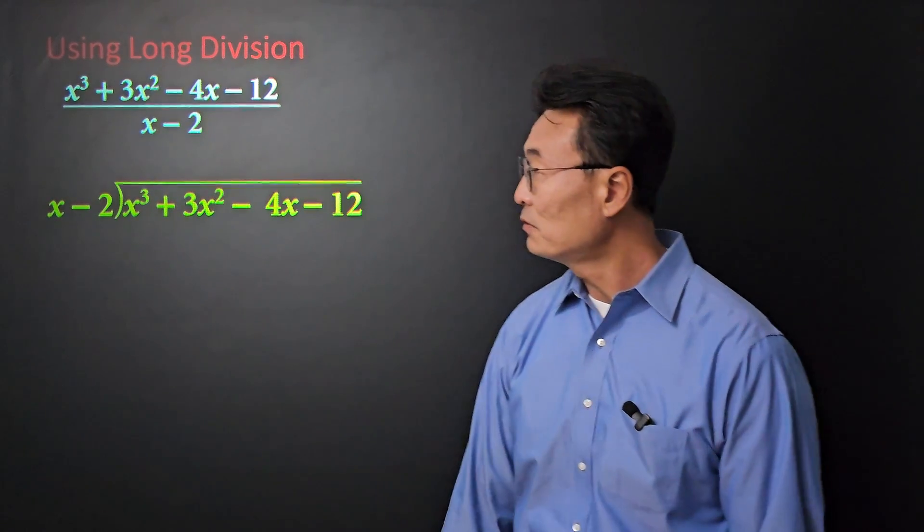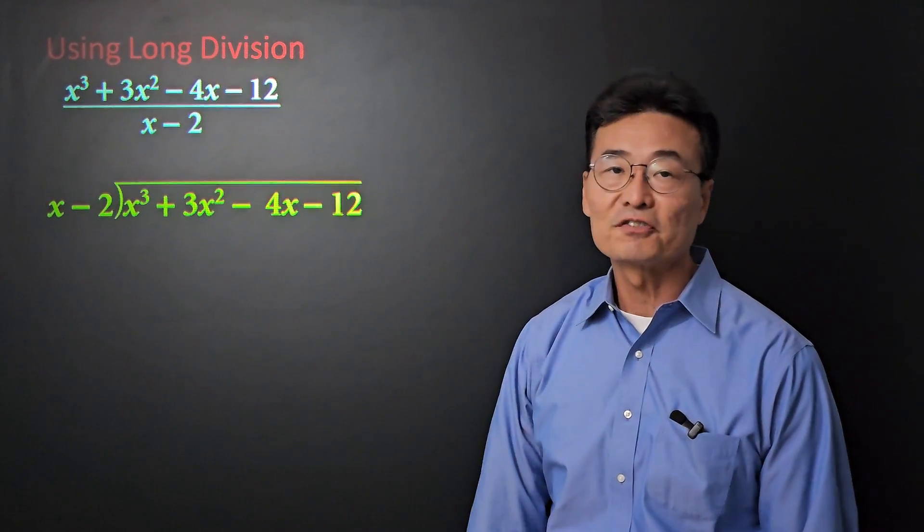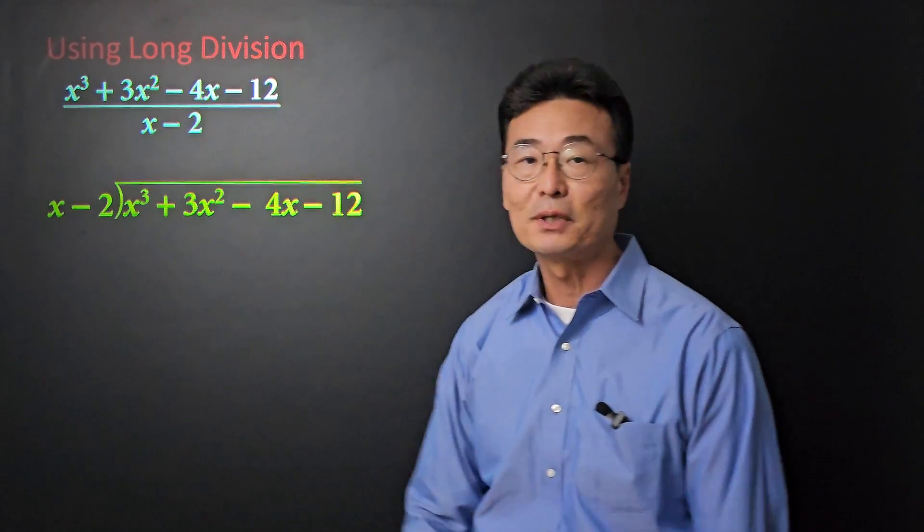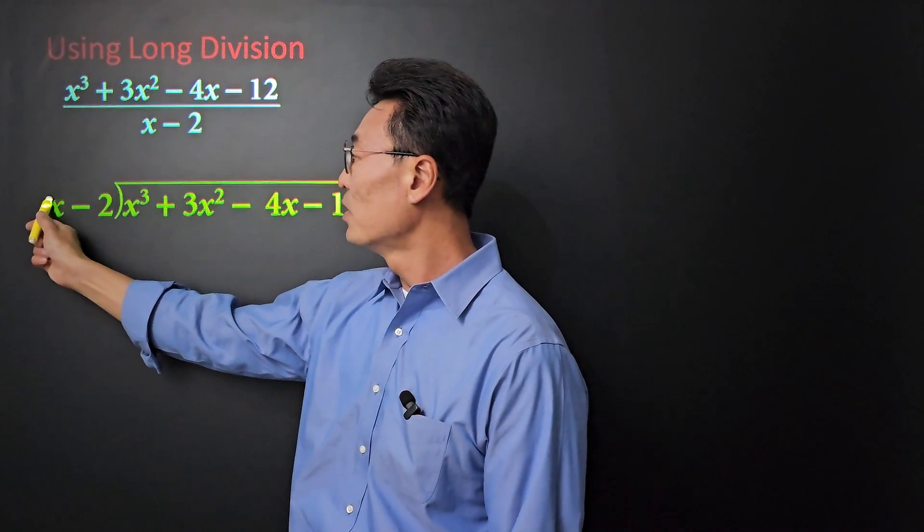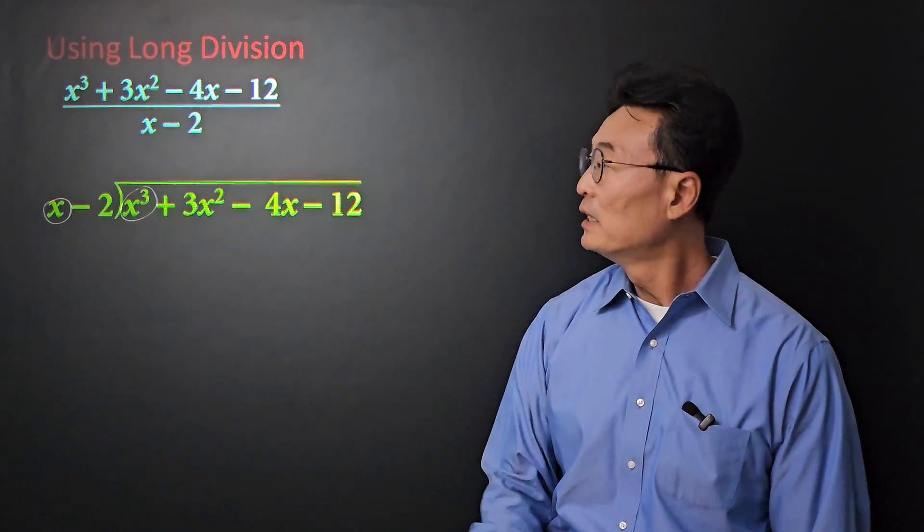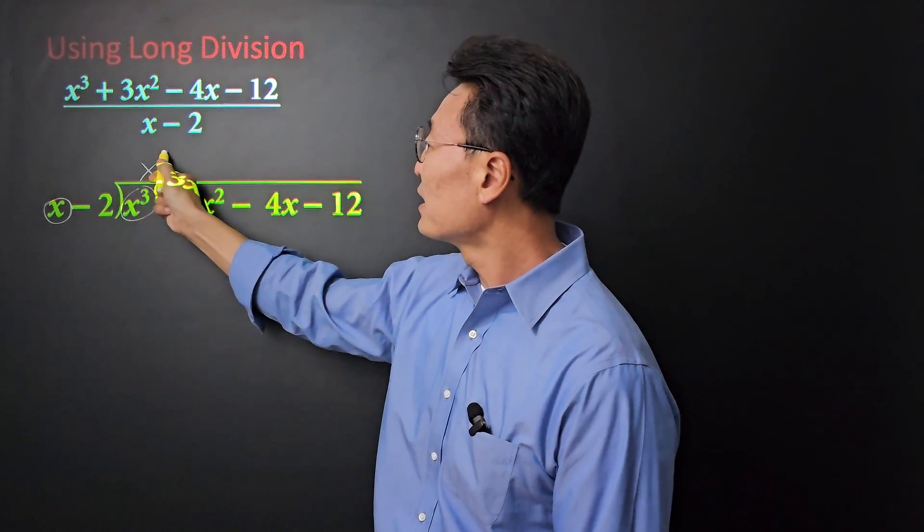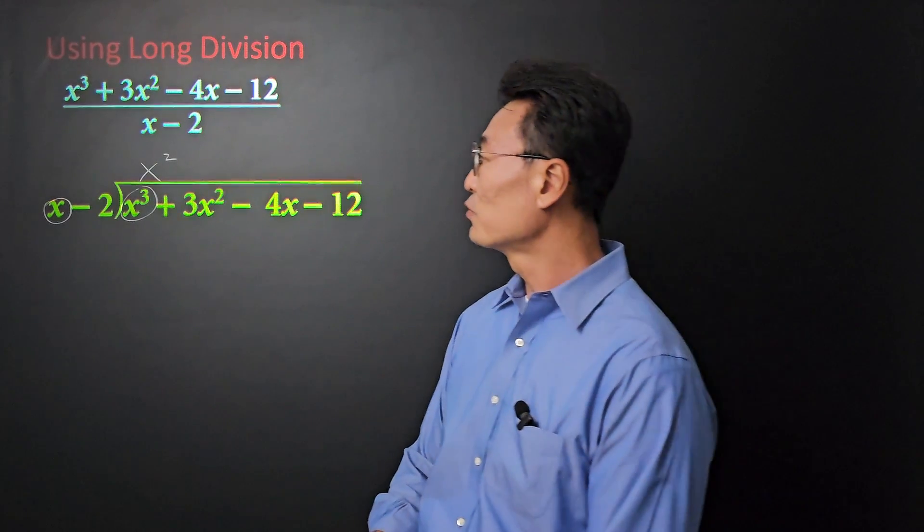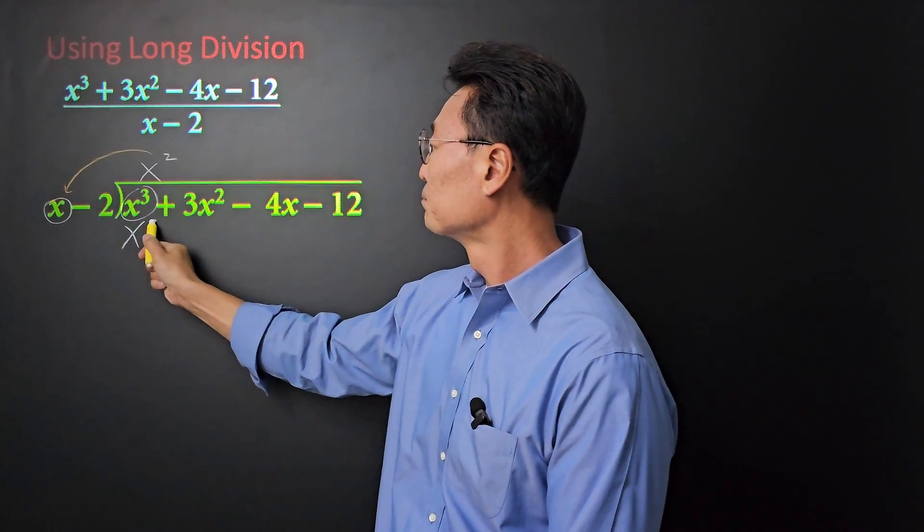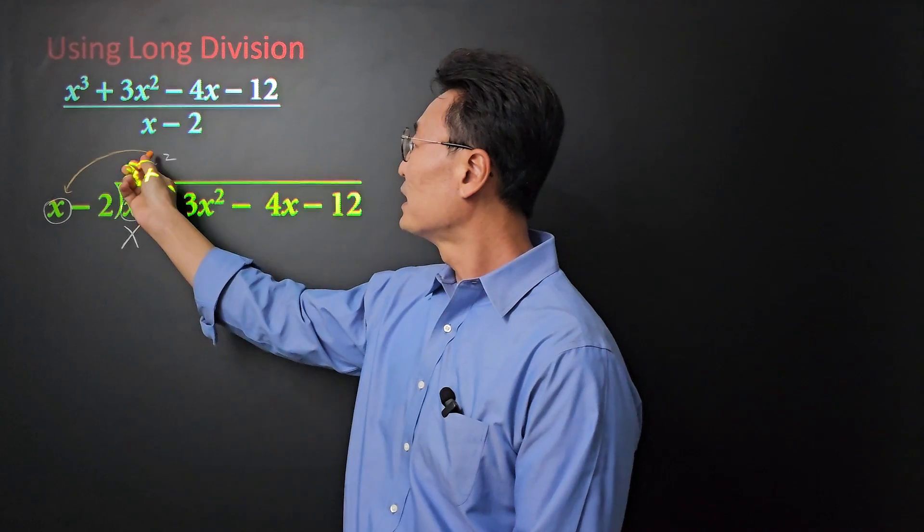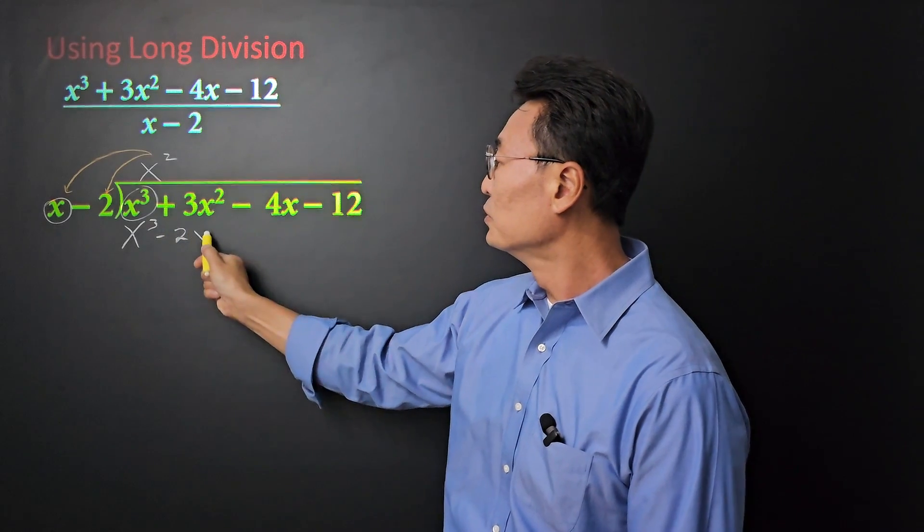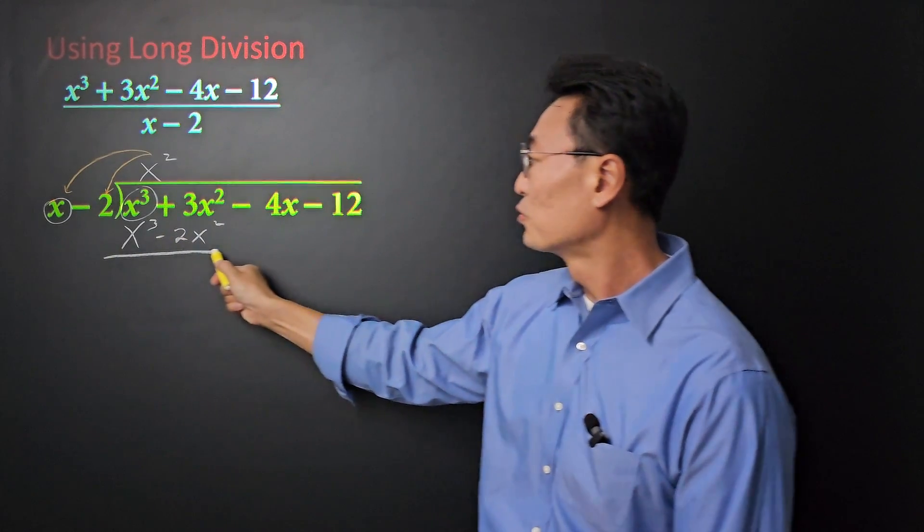Here's our long division. When we're dividing x cubed plus 3x squared minus 4x minus 12 by x minus 2, the first thing we want to think about is: what times x will give us x cubed? The answer to that is x squared. Once we take that x squared, multiply it to the x, we get x cubed. And then multiply it also to the negative 2, we get negative 2x squared.